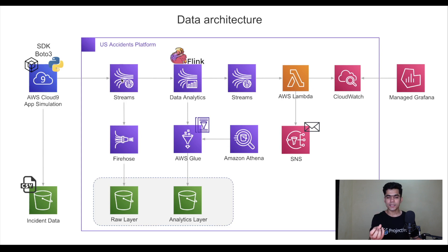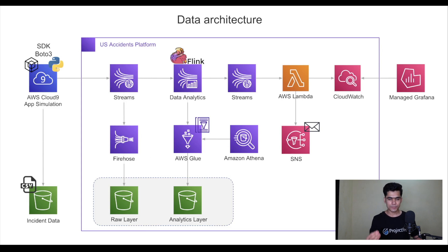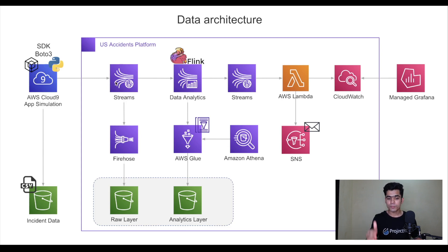Inside the AWS ecosystem, we have Kinesis Streams, which accepts all the streaming data ingested by our Python code. Amazon Kinesis has multiple services — one is Kinesis Streams, another is Firehose. Firehose is used for transformation or storing data onto S3. You can capture data from Kinesis and put it onto an S3 bucket using Firehose. So we inject data into Kinesis Streams, then use Firehose to put that raw data onto S3.